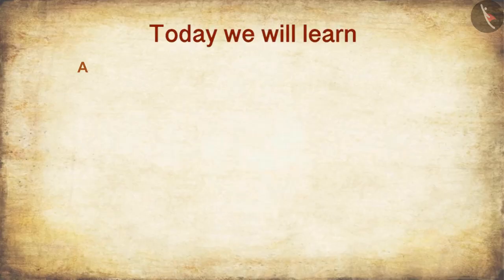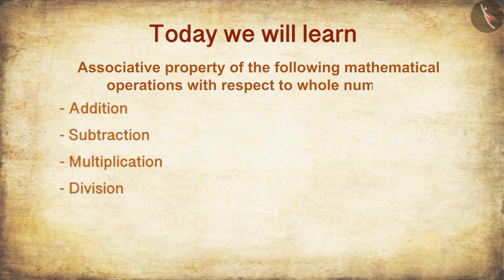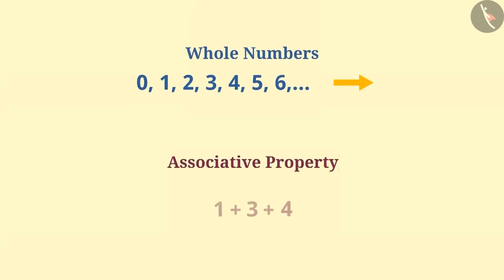Today, we will learn about associative property of the following mathematical operations with respect to whole numbers. We have read that numbers from 0 to infinity are called whole numbers. Associative property helps us to solve the mathematical operations by grouping the numbers. Let's understand it in detail.